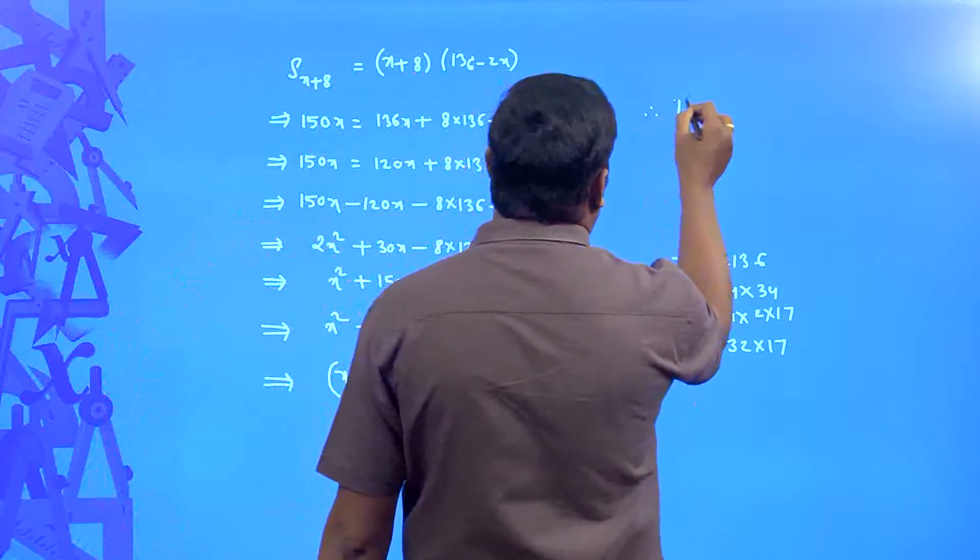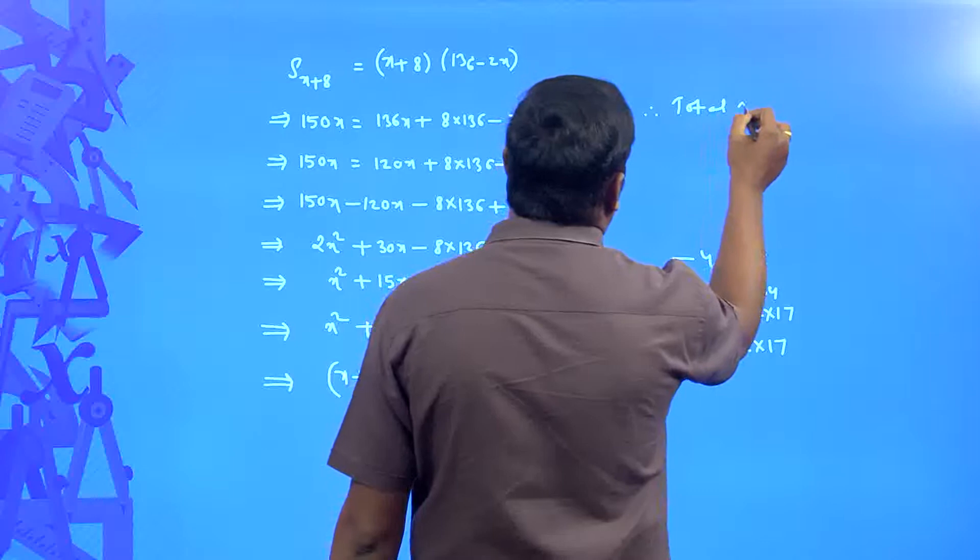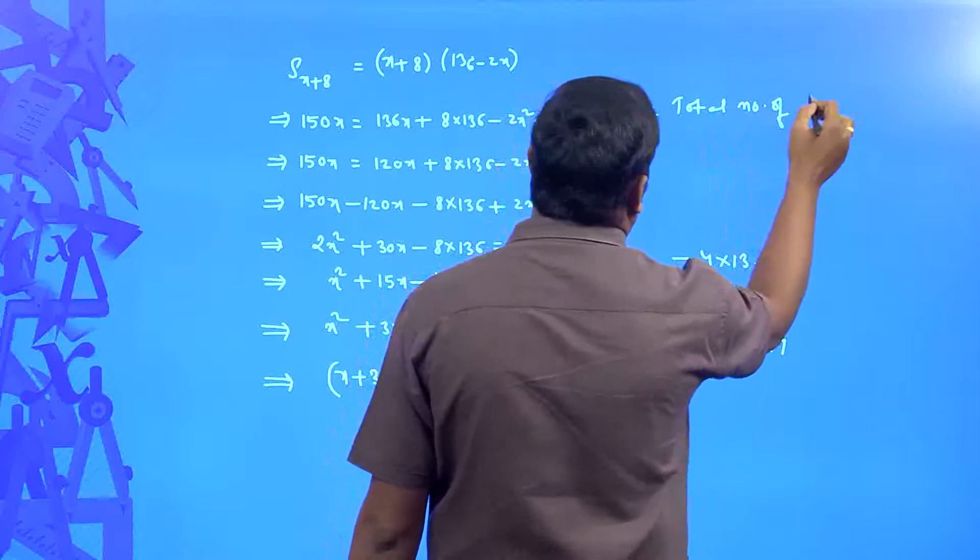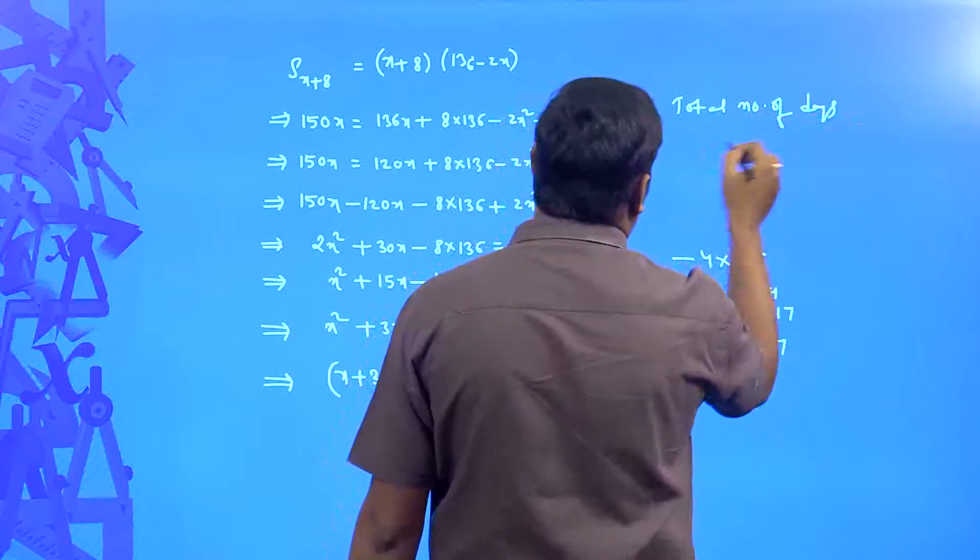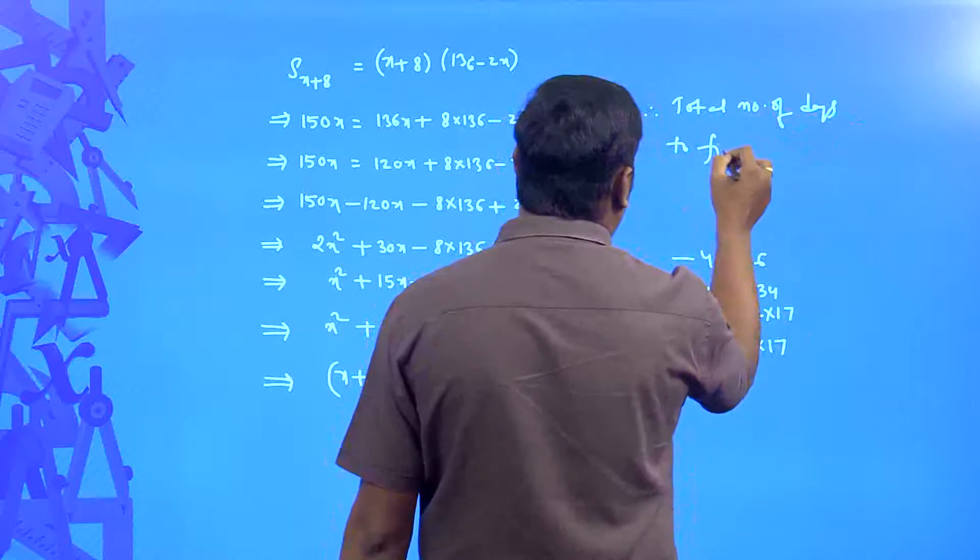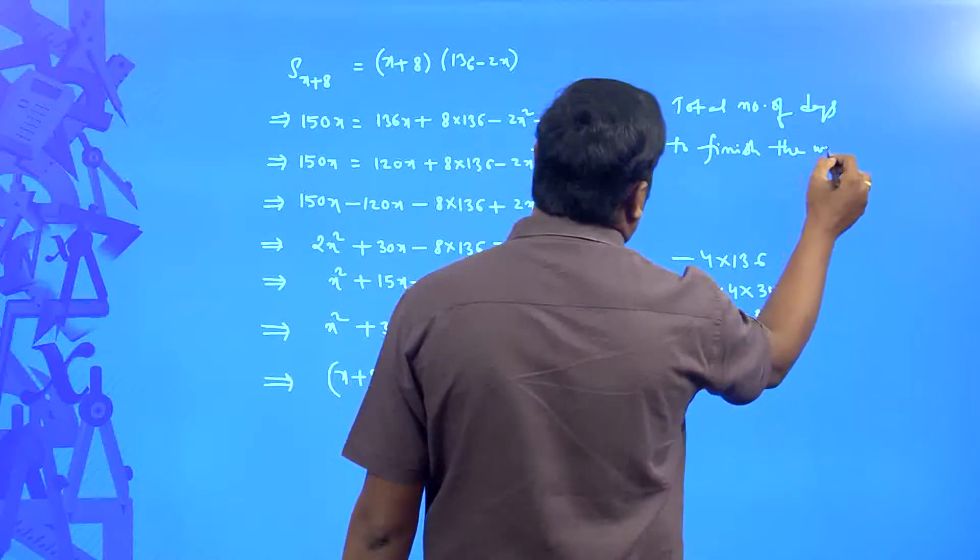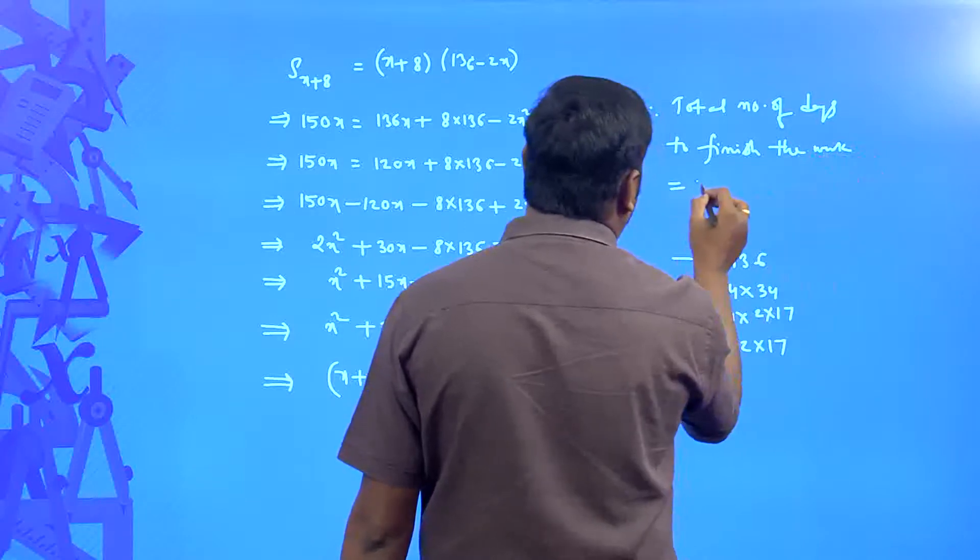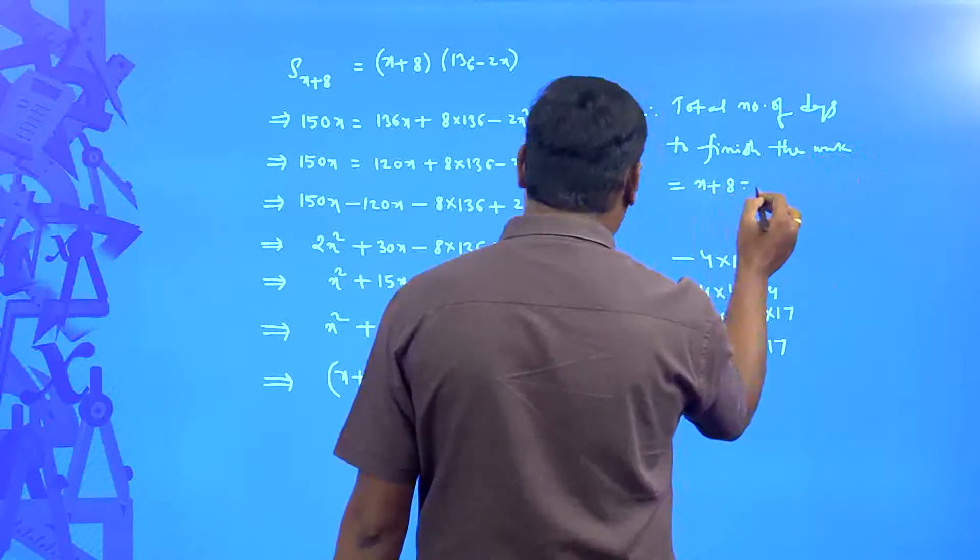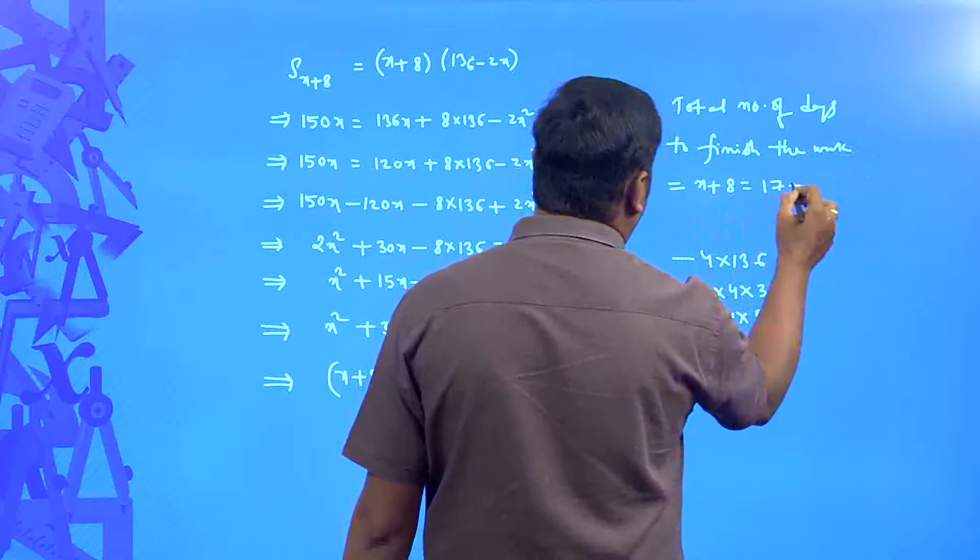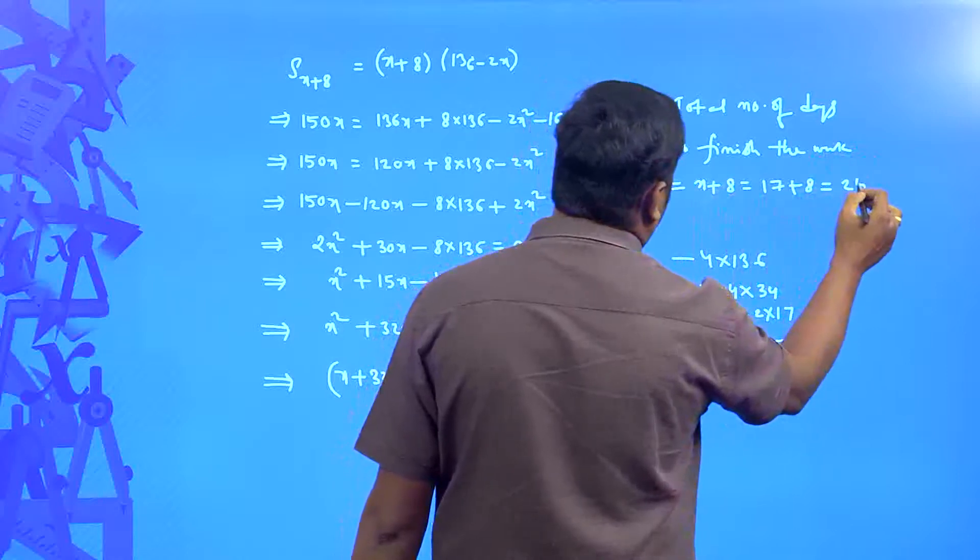Therefore, total number of days to finish the work is equal to x plus 8. x is going to be 17 plus 8, 17 plus 8 equal to 25.